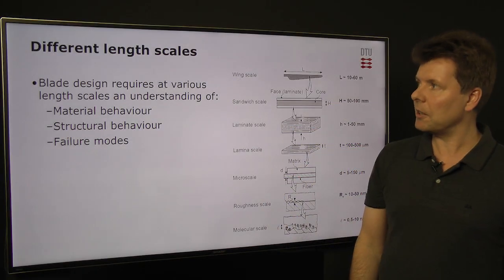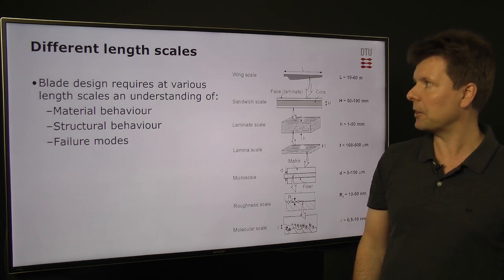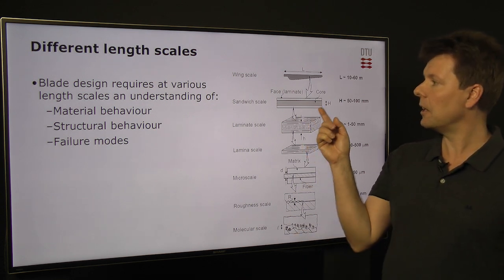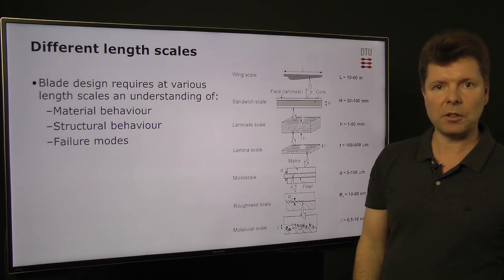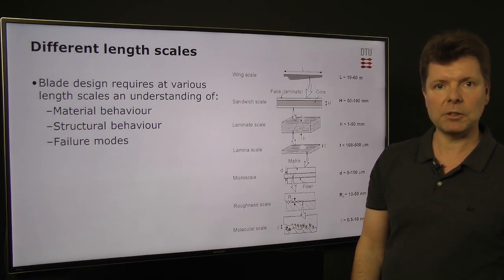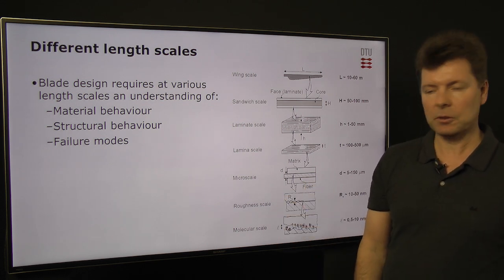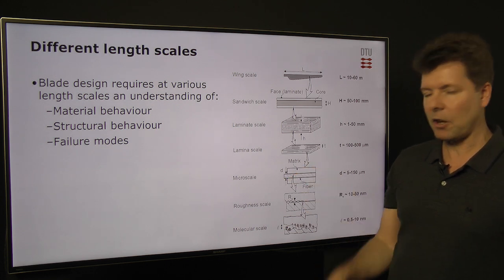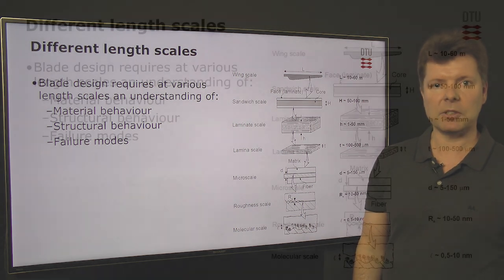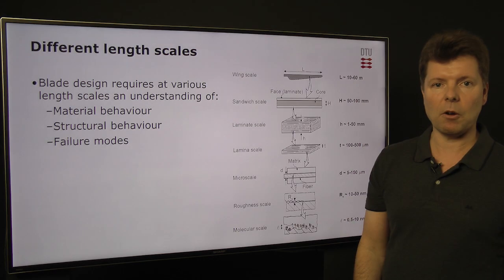In order to design the blades, we must understand the behavior of the blade at full scale. But when we zoom in, we should also be able to understand and design the different components of the blade. Zooming in further, we get to the composite material — the layers and the laminate. Further still, we come to the material itself: the individual fibers, the matrix around the fibers, and the interface between fiber and matrix. To design effectively, we must understand the failure mechanisms at all these length scales.